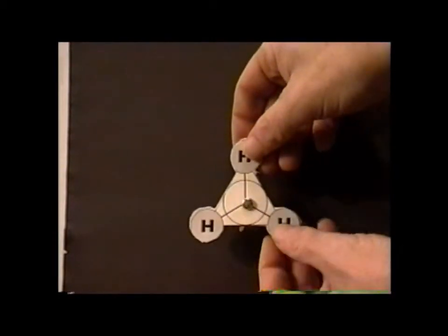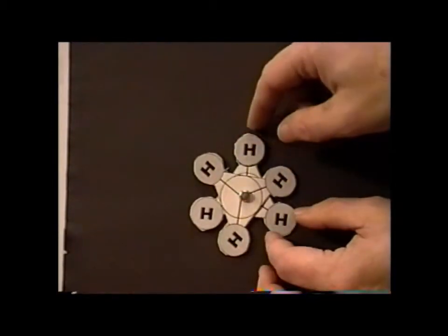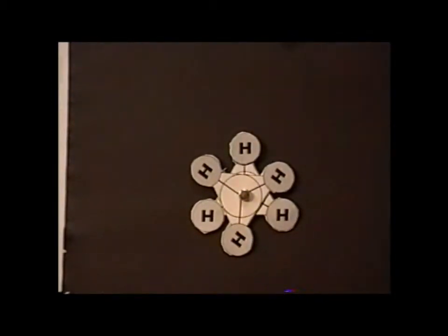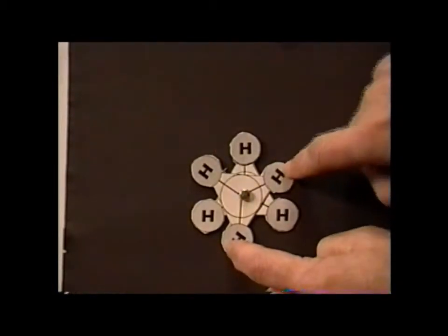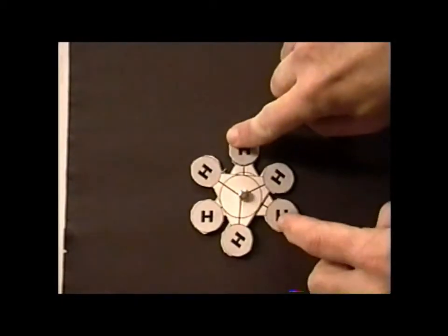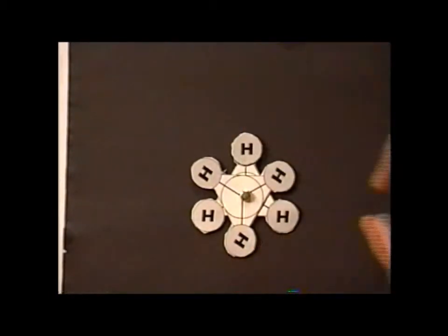Another conformation we can have is when the substituents that are attached to the second carbon, the carbon that is behind, so the front substituents are here, here, and here. We notice that they are sort of peeking out. We call this the staggered conformation.